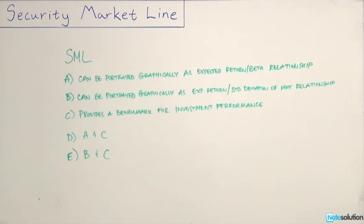So the question is the security market line: A, can be portrayed graphically as expected return beta relationship? B, can be portrayed graphically as expected return standard deviation of the market relationship. C, provides a benchmark for investment performance. D is A and C and the last option is B and C.